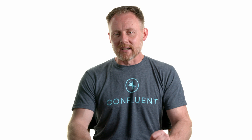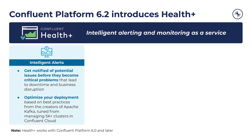It gives us a few new things: intelligent alerts, cloud-based monitoring, and a streamlined support experience. First up, intelligent alerts. These allow you to get customizable rule-based alerts to identify problems before they become critical issues that lead to downtime and business disruption. We've managed over 5,000 clusters in Confluent Cloud, so we've had the ability to build up some interesting algorithms around alerting. Now that functionality is available to you even if you're not a Confluent Cloud user.